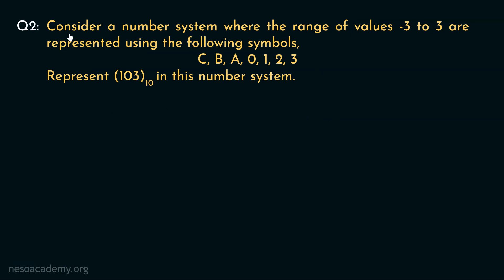Observe this question. Consider a number system where the range of values minus 3, 2, 3 are represented using the following symbols c, b, a, 0, 1, 2 and 3. So these are the symbols of the stated number system. Now, we have to represent the decimal number 103 in this number system. Well, this is a very interesting question. So let's try to solve it.